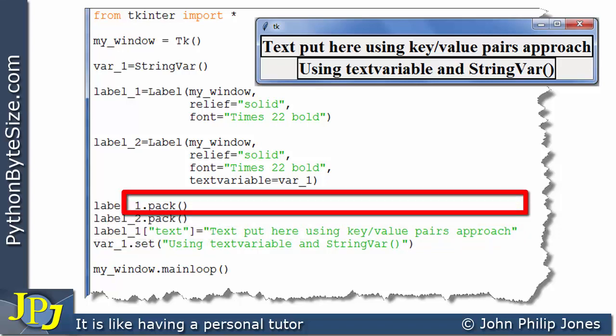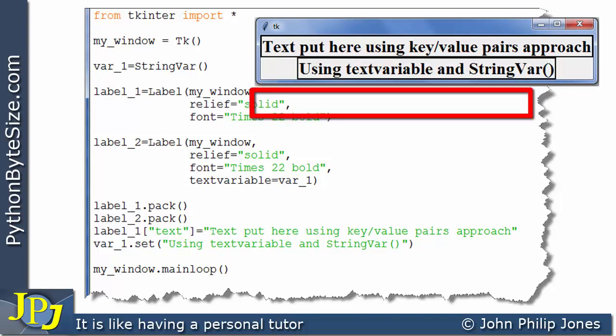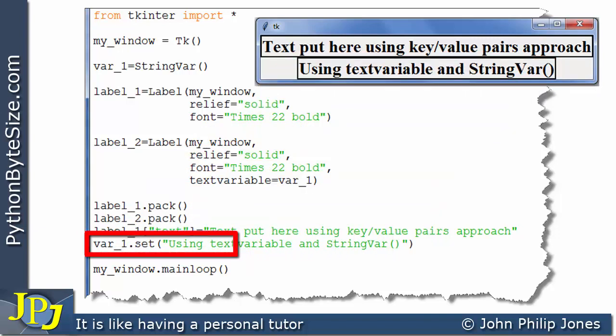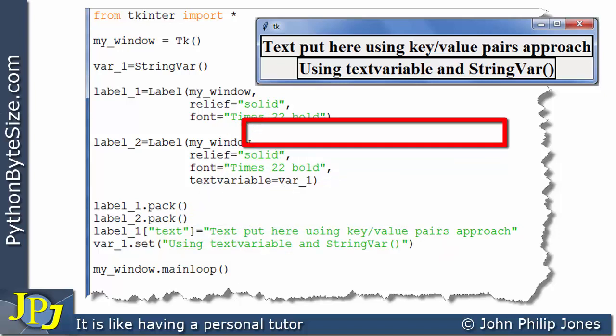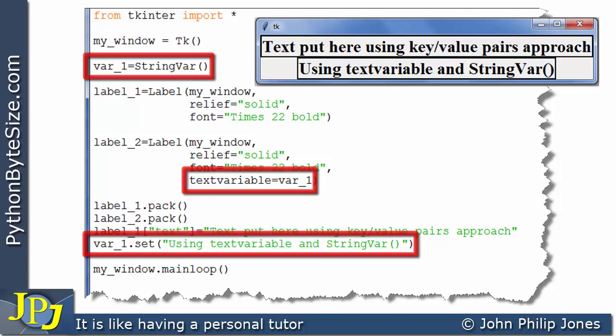If you look at the label content here, it says using text variable and string var. Now that means it actually uses the set method, as you can see on this line. There's the variable, var1, that was declared here. This is the set method. And if you look at the set method, you can see in brackets we have that string that is displayed here in the label. So there's two approaches, and as I've already said, this is the one that tends to be used.